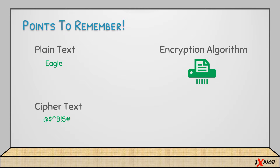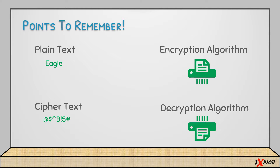The third one is ciphertext. Once the encryption algorithm is applied on the plain text, the output is unrecognizable data — that is known as ciphertext, and it is not easy to crack. The fourth one is the decryption algorithm, which is the reverse of the encryption process. The decryption algorithm is performed on the ciphertext to retrieve back the original plain text.